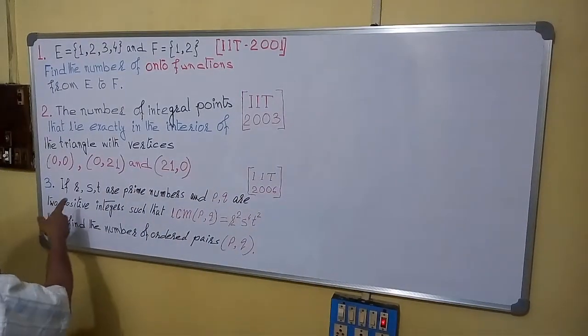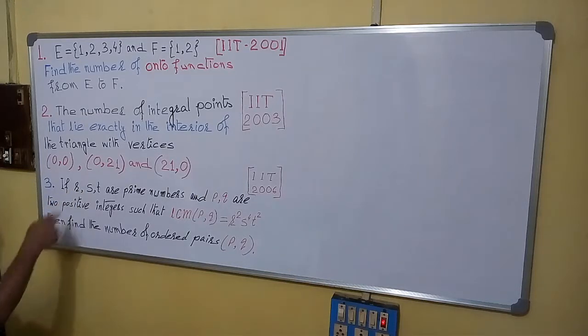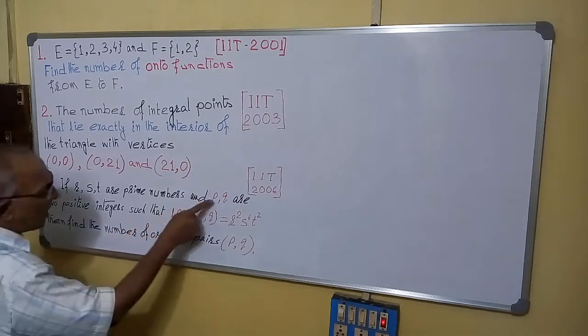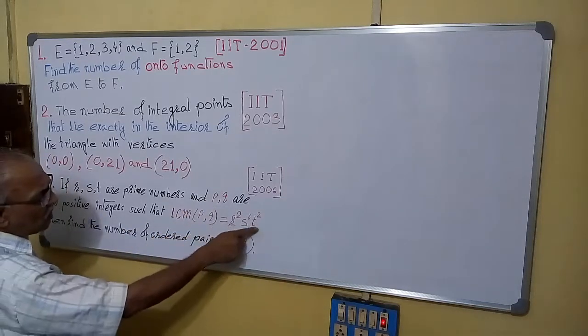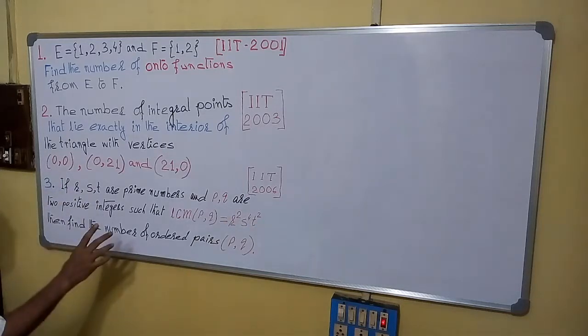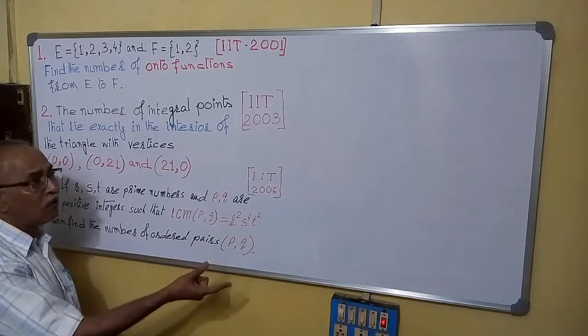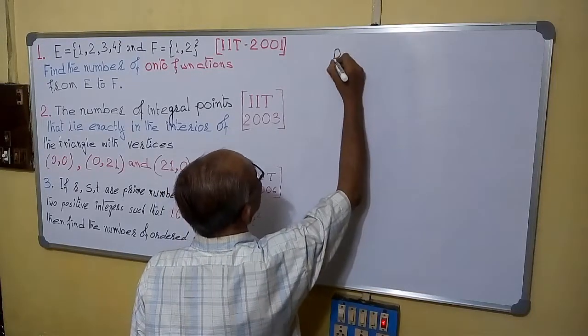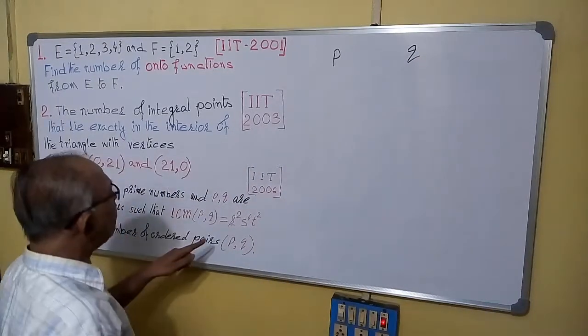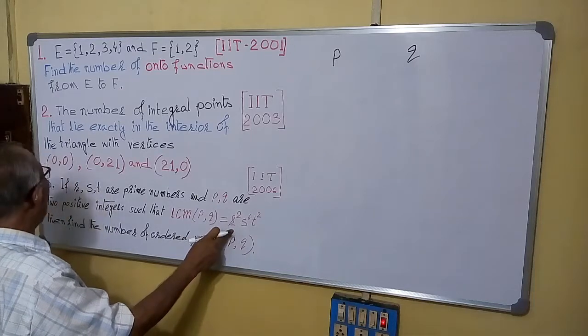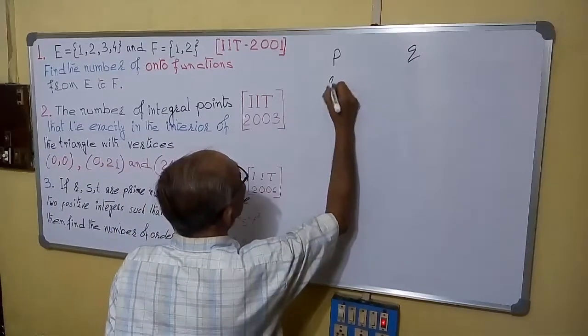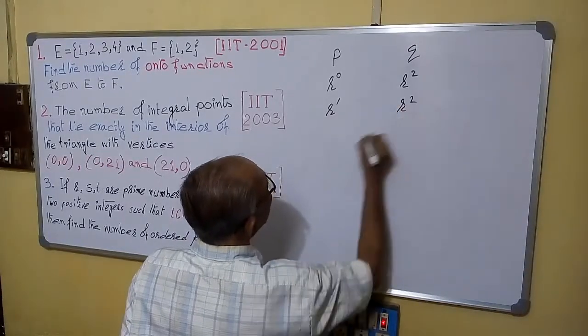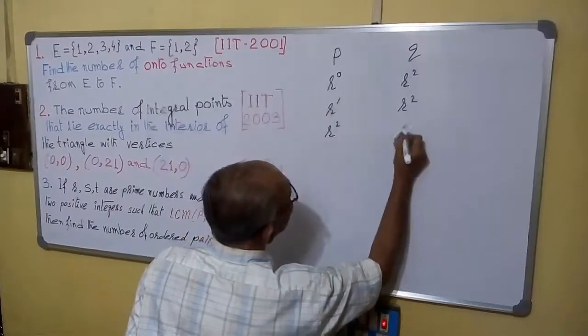Now, see this third question. If R, S, T, these are prime numbers. And P, Q are two positive integers, such that, LCM of P and Q is R square, S to the power 4, T square. Then find the number of ordered pairs, give importance to ordered pairs. Means, P, Q and Q, P are different. So I am showing what are the possible situations for P and Q. We are thinking about R. And remember, LCM is R square. So here it may be R to the power 0, here it is R square. Here it is R to the power 1, it is R square. R to the power 2, then also it is R square.